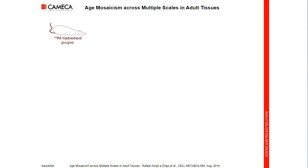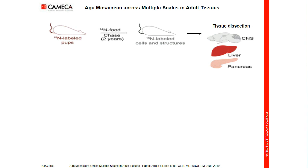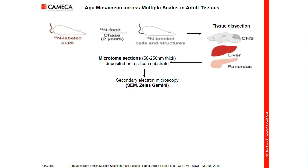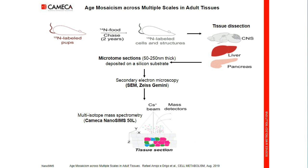During the chase period, when nitrogen-15 labeled cells are replaced by newly synthesized cells, nitrogen-15 is replaced by nitrogen-14. The vast majority of nuclear nitrogen-15 is expected to stem from nitrogen-15 DNA, which decreases by 50% after each cell division. Graphically: nitrogen-15 labeled pups undergo a long phase of nitrogen-14 food; mice are then euthanized, tissues dissected, and the central nervous system, liver, and pancreas are microtome-sectioned and deposited on silicon substrate. Where the nitrogen-15 ratio is high, it means old cells; where the ratio is low, it means a young, newly generated cell.